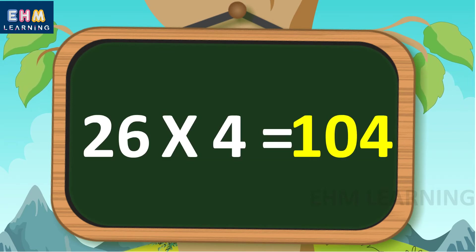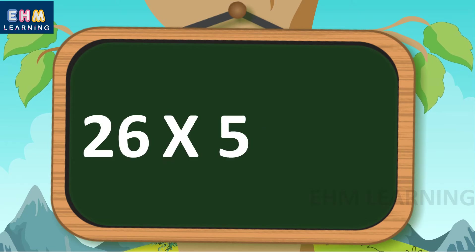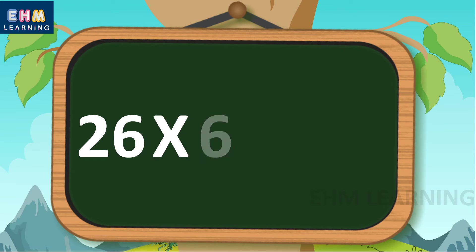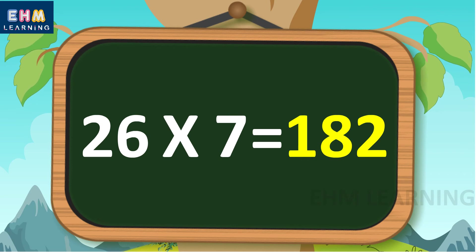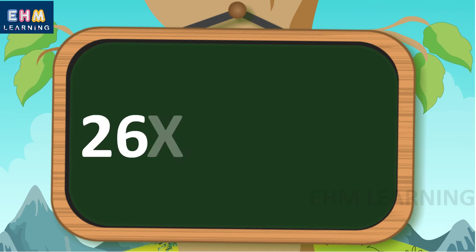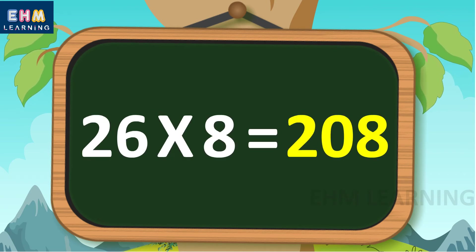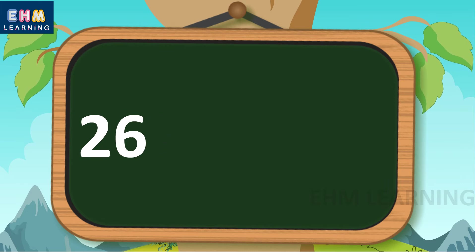26 fours are 104, 26 fives are 130, 26 sixes are 156, 26 sevens are 182, 26 eights are 208.